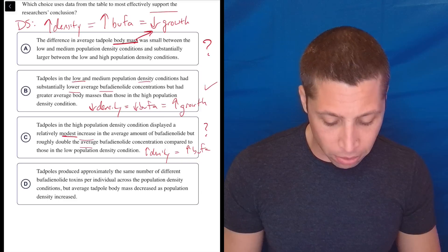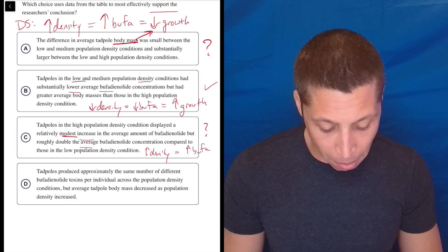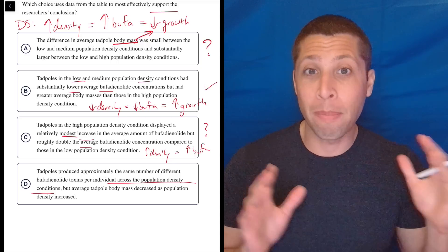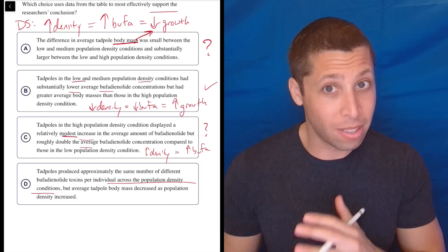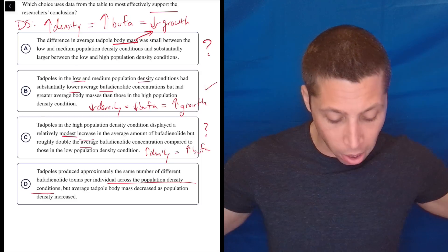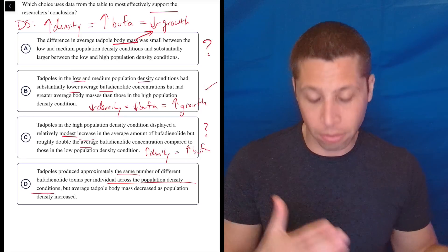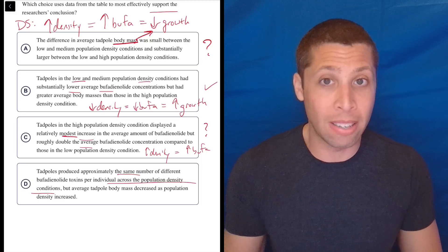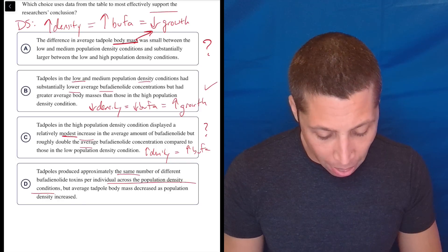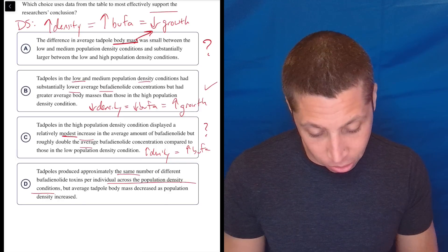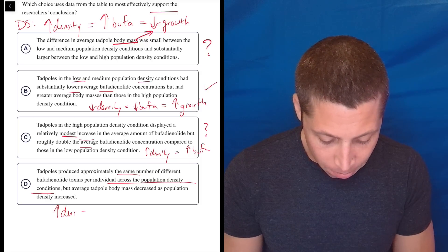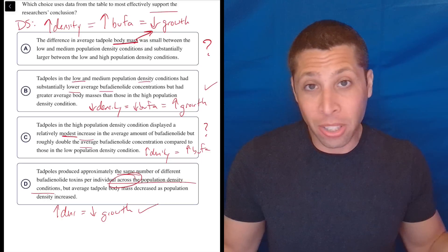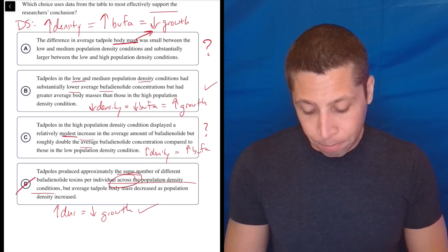D, tadpoles produced approximately the same number of different bufa toxins per individual across the population density conditions. Well, right there is my problem, right? The whole point is that density matters. That choice seems to be saying—choice D seems to be saying that bufa does not matter. If it's across the population density, then it has the same number of toxins. That's saying that they're the same no matter the density, and that gets rid of the whole idea of these arrows affecting things. So let's look at the end. But average tadpole body mass decreased as population density increased. Well, okay, increase density means decrease in growth. That part checks out, but dumb summary-wise, I don't want to say things are the same. I want to see a trend.